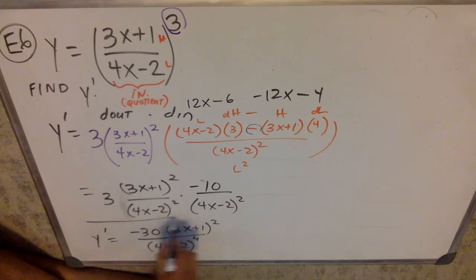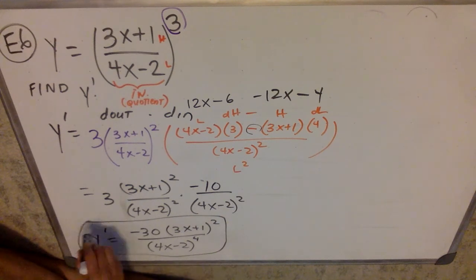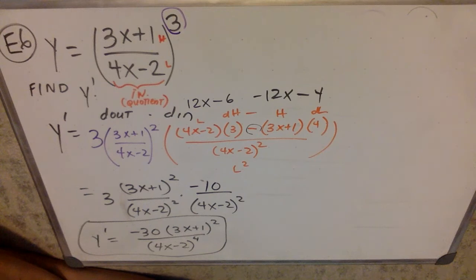Notice that at no point was it really worth distributing a bunch of stuff — I wanted to try and simplify as much as possible without distributing, but it was a quotient inside a chain. I'm going to give you a P6 that's similar, and you can give it a try.